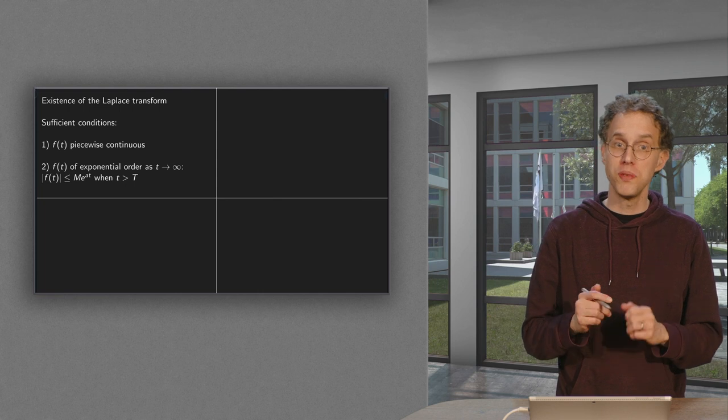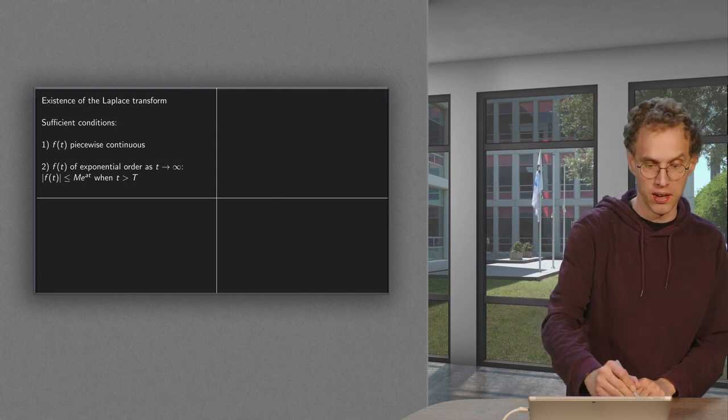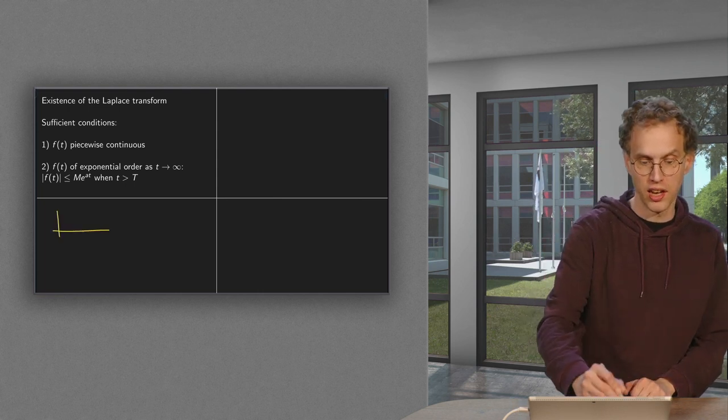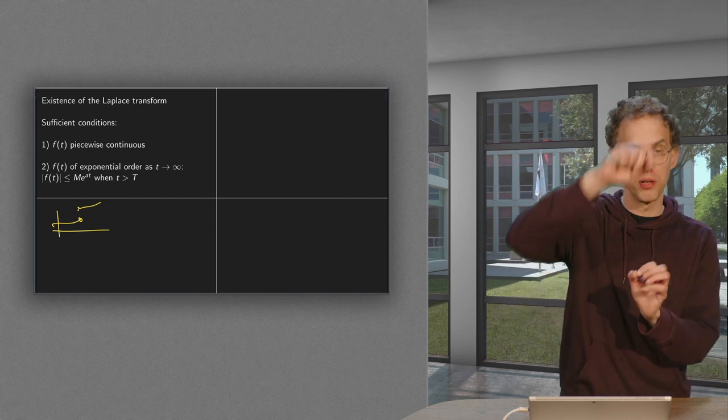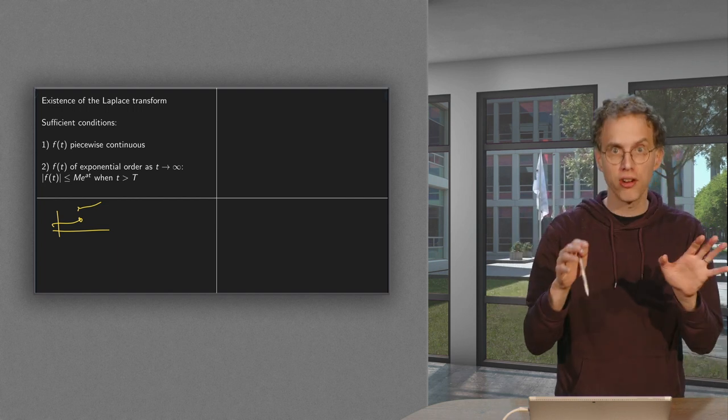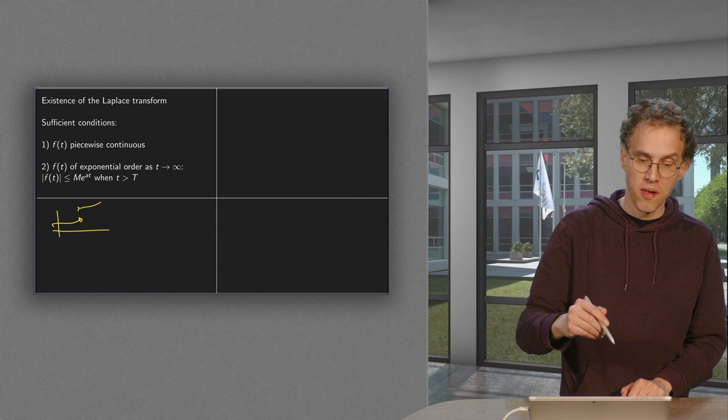So what does this piecewise continuity mean? Well, let's make a sketch to show it. So piecewise continuous function, it may jump a bit. So like this, make a small jump above and then you're fine.